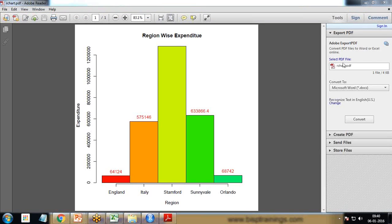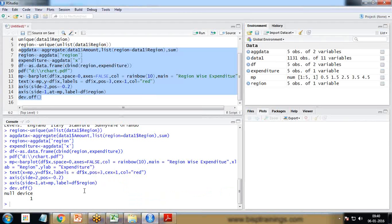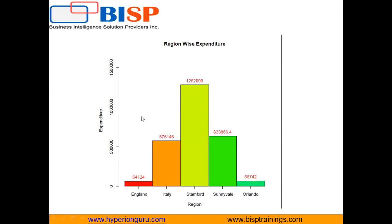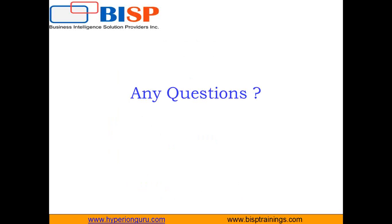We can save the chart in PDF format or JPG format as well. That's how we can generate region-wise expenditure bar charts and financial reports using R programming. If you have any queries, write to us at www.bsptrainings.com and subscribe to our YouTube channel for more videos on financial reports in R programming. Till then, have a nice day, goodbye.